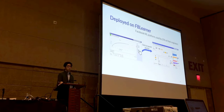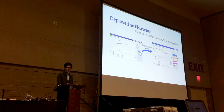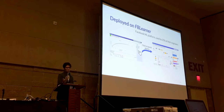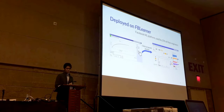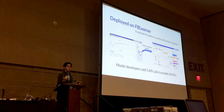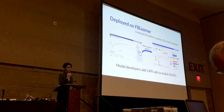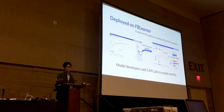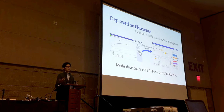Activist is deployed on FB Learner, Facebook's machine learning platform, used by most Facebook machine learning engineers. Users can create experiments through the web-based interface, and when training is done, the interface provides a results page with a link to launch Activist for their models. If a new model is implemented, developers simply add three API function calls to their code, and everything is handled by FB Learner — a link is created so users can open Activist without writing any additional code.